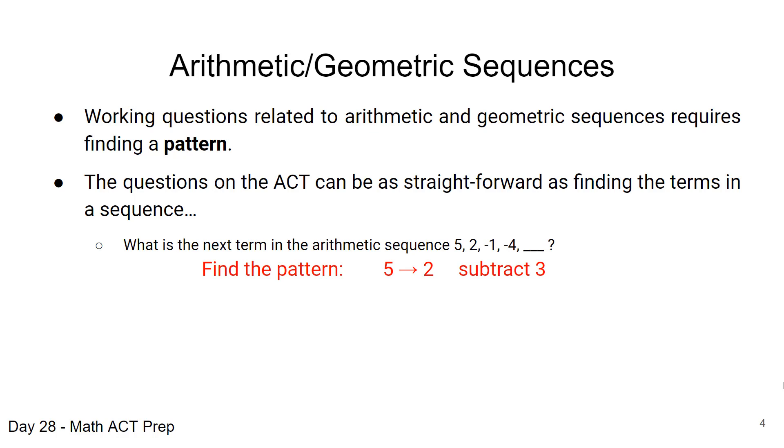So the first step is we want to find what the pattern is, and we can start with the first two terms that were given. From 5 to 2 we subtract 3, and just to confirm from 2 to negative 1 we subtract 3. From negative 1 to negative 4 we subtract 3, so it would make sense from negative 4 to the missing number we would subtract 3 and we get negative 4 minus 3 is negative 7.